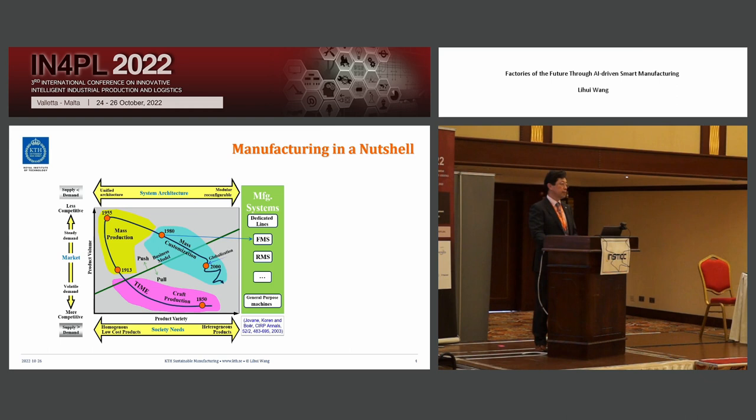manufacturing started in 1850 — that's the craft production. If you have a wish as a customer, you approach a craftsman or craftswoman to express your desire, and the individual expert will produce the item for you. Later on, this variety of product decreased; however, the volume increased. In 1913, manufacturing entered into the mass production paradigm. This is mainly contributed by Ford.